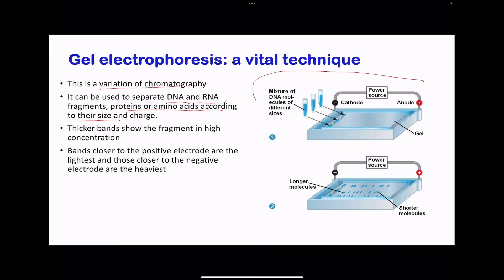Electrophoresis occurs in a gel where there is a negative electrode (cathode) and a positive electrode (anode). Since DNA is negatively charged, it is drawn towards the positive electrode and travels through the gel. The distance traveled by DNA or protein fragments is based on their sizes — those that have traveled farther from the negative electrode are the lightest, while those still closer to the negative electrode are the heaviest. Bands that are thicker show higher concentration, and those that are thinner show lower concentration.